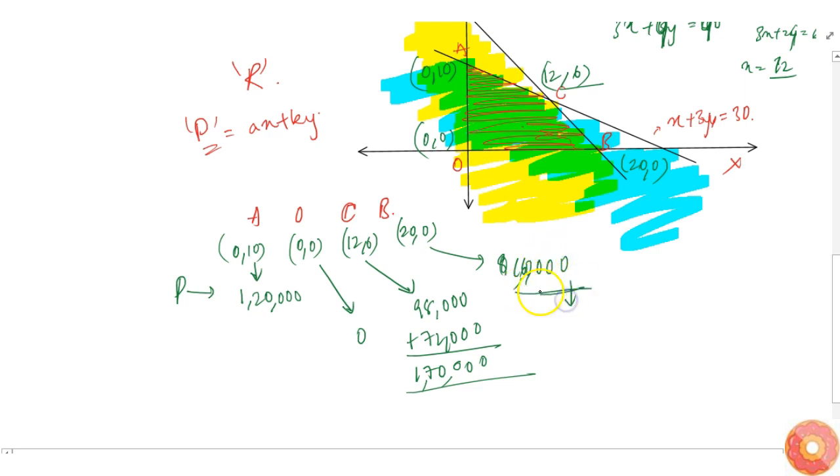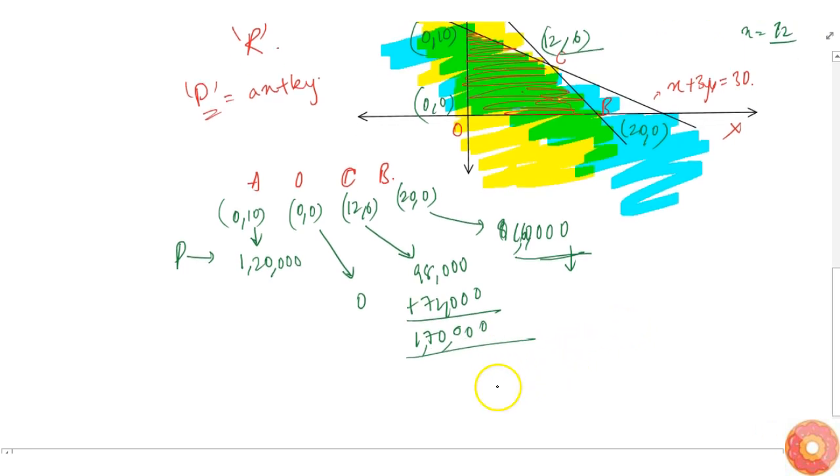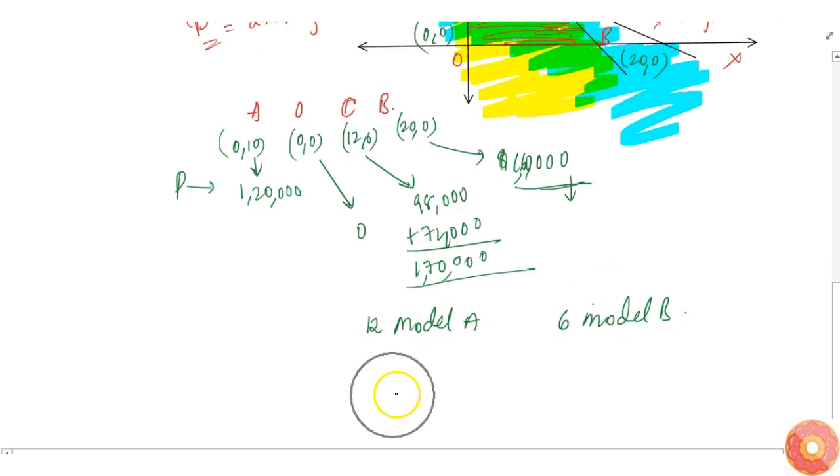As you can see, the highest is at point C, which is 12 comma 6. So we need to make 12 Model A pieces and 6 Model B pieces to get the maximum profit of 1,68,000 rupees per week.